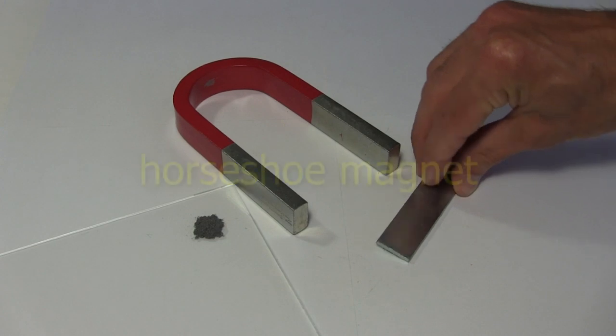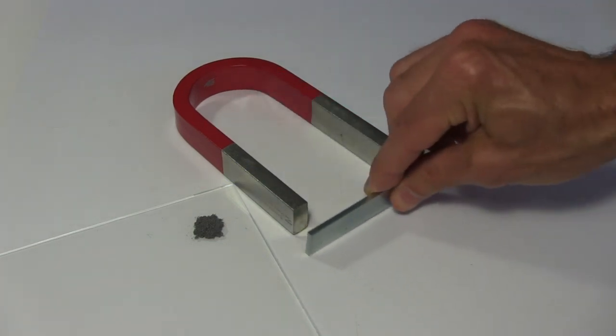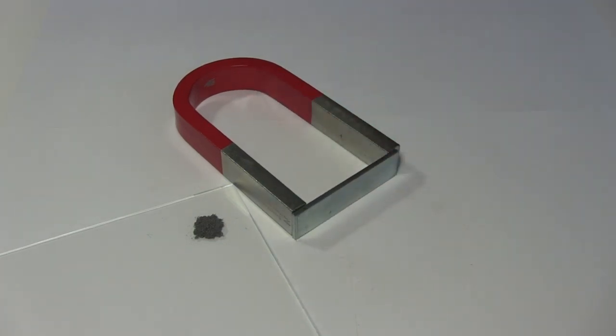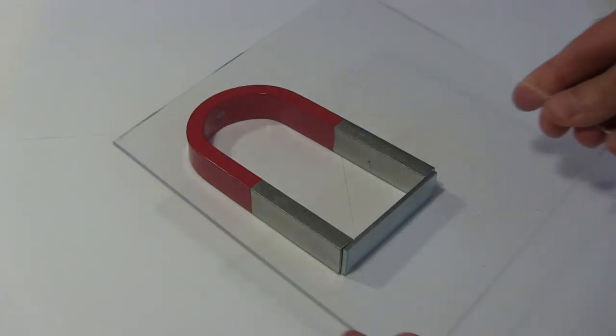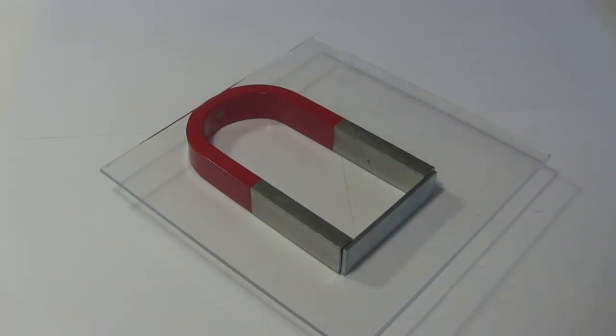Let's begin with the horseshoe magnet. The keeper is just a piece of steel that, as you'll see, can be used to shape the magnetic field. On top of that I'll put a sheet of plexiglass. That's to keep the iron filings from contacting the magnet directly, making it hard to clean up the mess.